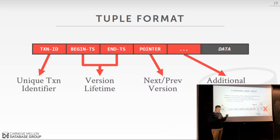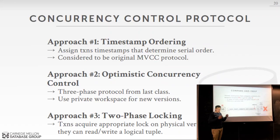Ignoring additional metadata, we have four 64-bit fields per tuple — so 32 bytes of storage per tuple just for multiversion metadata. If you have a billion tuples, that's 32 gigabytes of memory dedicated to MVCC metadata. Although multiversion seems awesome and provides a lot of benefits, it doesn't come for free. This illustrates the classic database trade-off of compute versus memory.